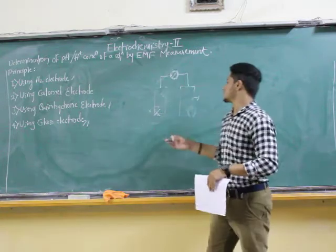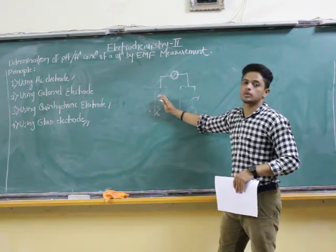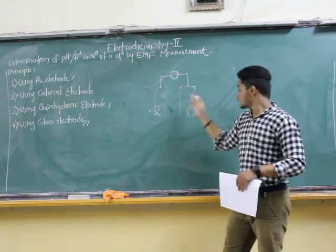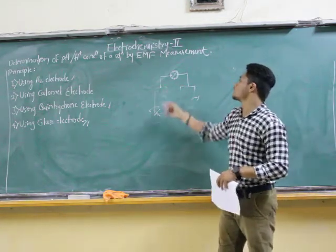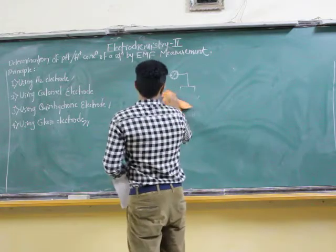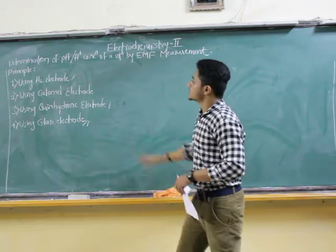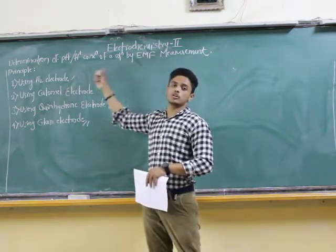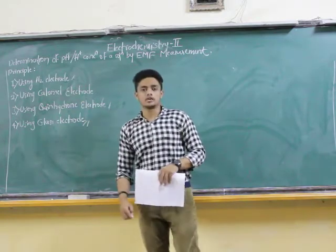The principle simply says: one of the electrodes whose potential depends upon H⁺ ion concentration, and the other electrode should be a reference electrode. By combining these two, we construct a cell. The first method is using the hydrogen electrode — how to determine the pH or H⁺ ion concentration using a hydrogen electrode.